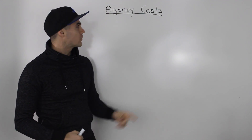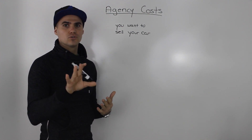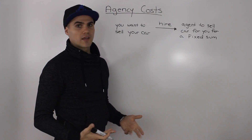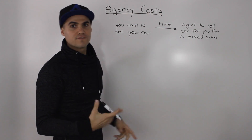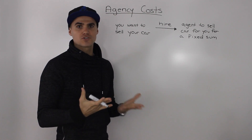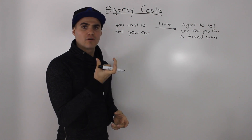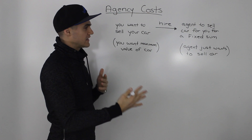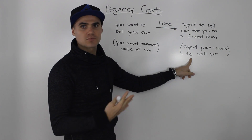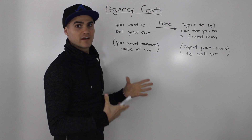In this video we're going to talk about agency costs. Let's start with a simple example: you want to sell your car but you're busy and don't know how the car market works, so you hire an agent to sell it for a fixed sum of $1,000. He gets paid that fixed amount no matter what — whether he sells it for $20,000 or $15,000. Right away, you can tell that the interests are not aligned, and that misalignment of interest is an example of an agency cost.